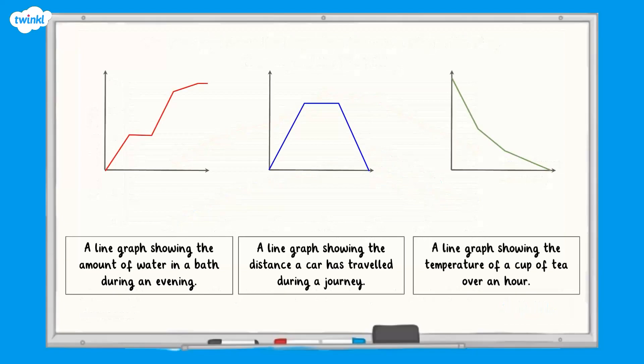These line graphs have all the key information missing. Can you use the shapes of the graphs to match each one to its title?